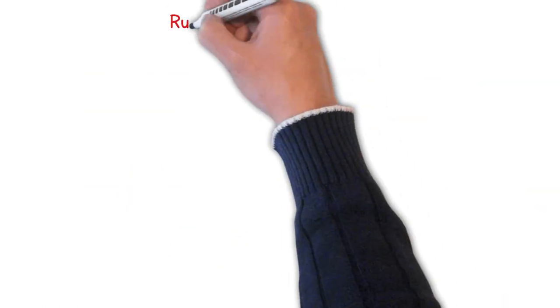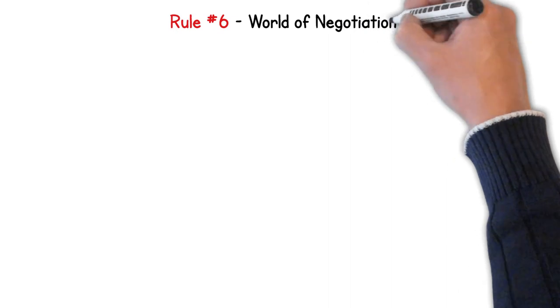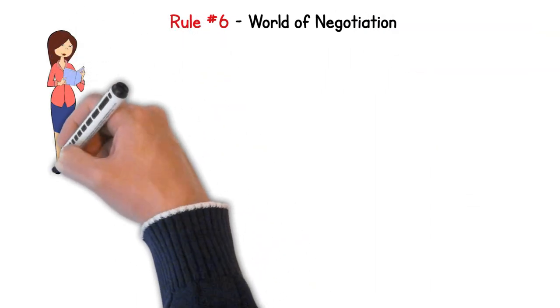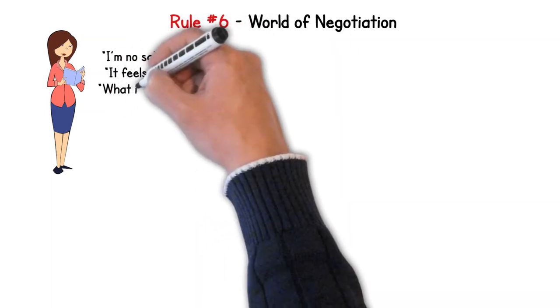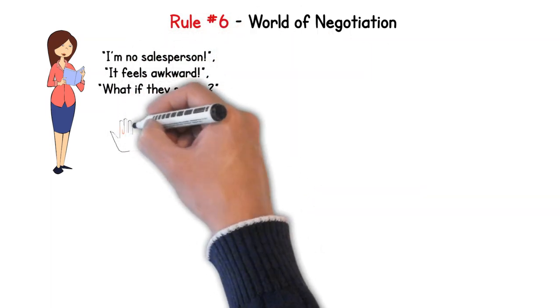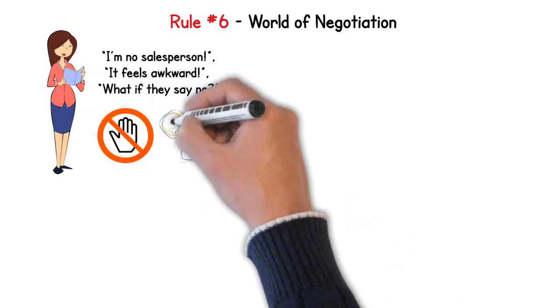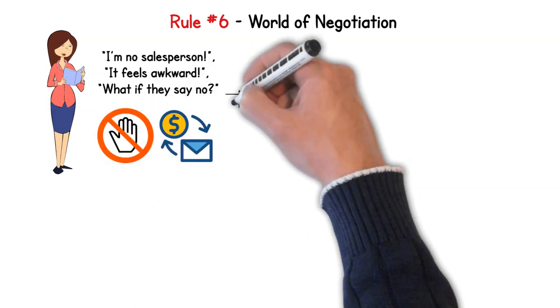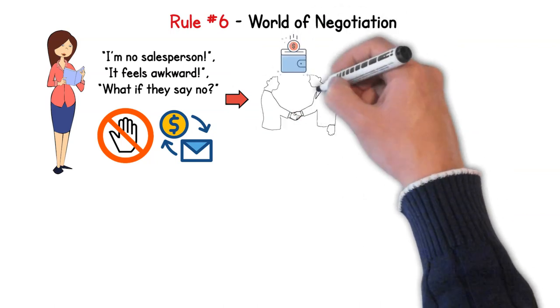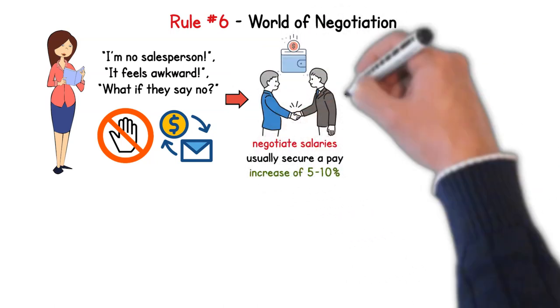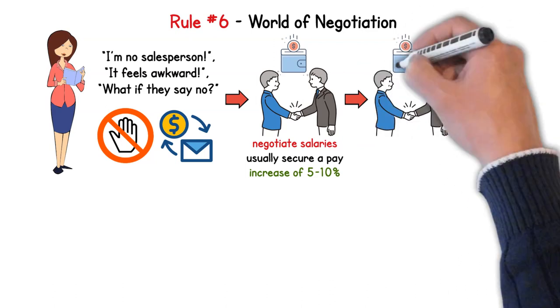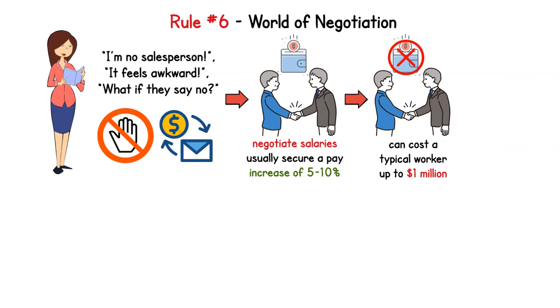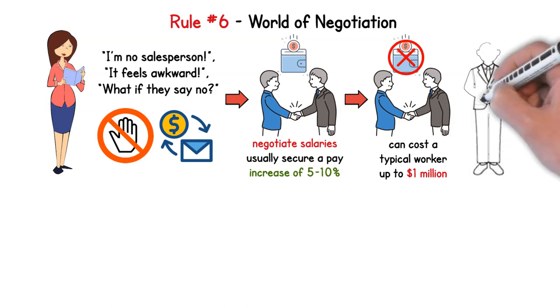Alrighty, onto rule 6. We're diving into the world of negotiation. Now I know what you're thinking, I'm no salesperson, it feels awkward, or even what if they say no? But hold that thought. The magic isn't in always getting a yes, it's in the attempt and the strategy behind it. Those who do negotiate salaries usually secure a pay increase of 5 to 10%. Over a lifetime, failing to negotiate can cost a typical worker up to $1 million. Yeah, that number gave me a pause too.